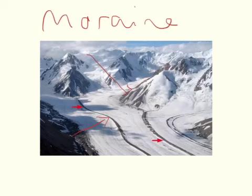This scree then falls into the side of the glacier, so you have a line going down here and going all the way down here, with some coming across there. And that's where you get your lateral moraine.